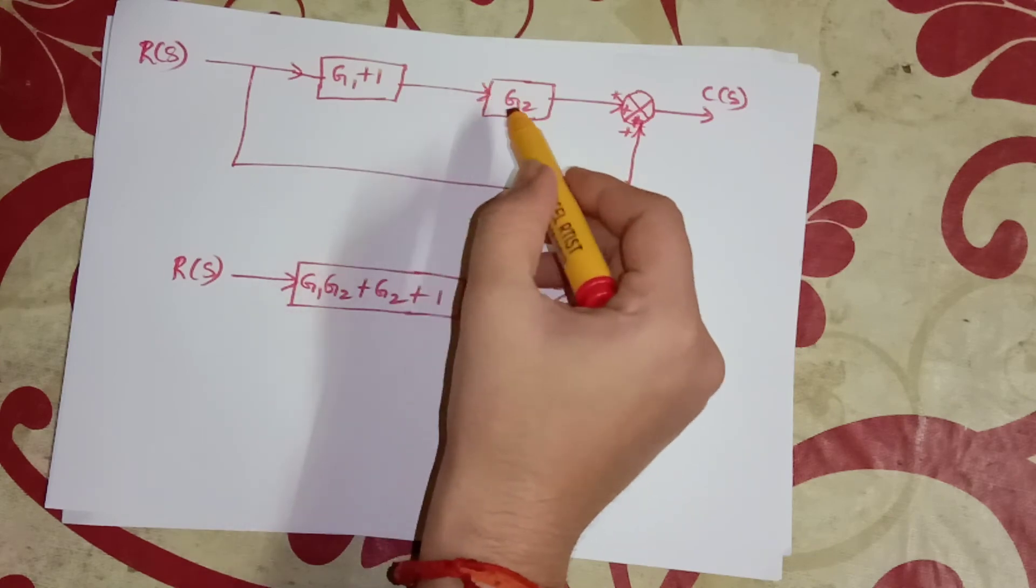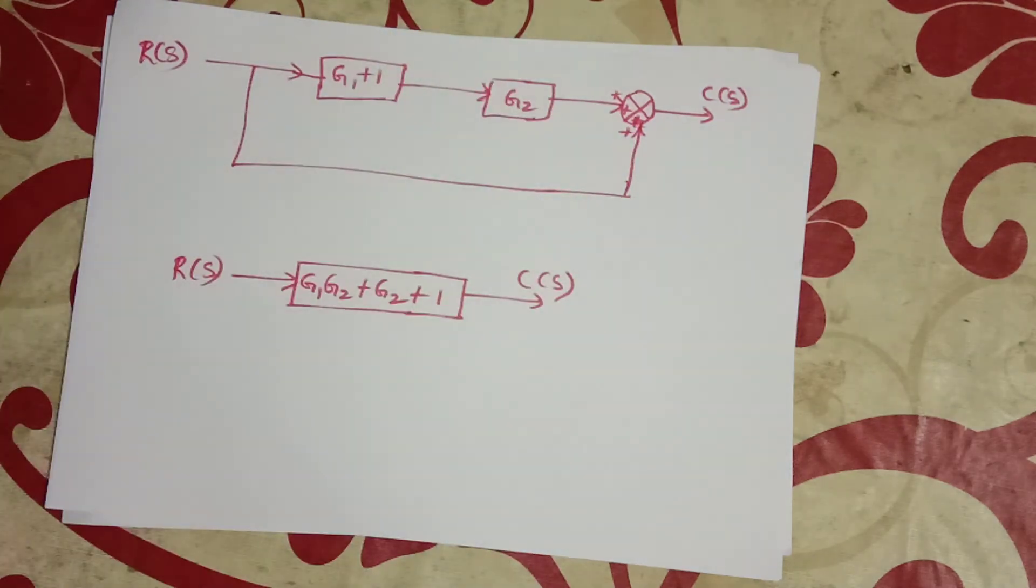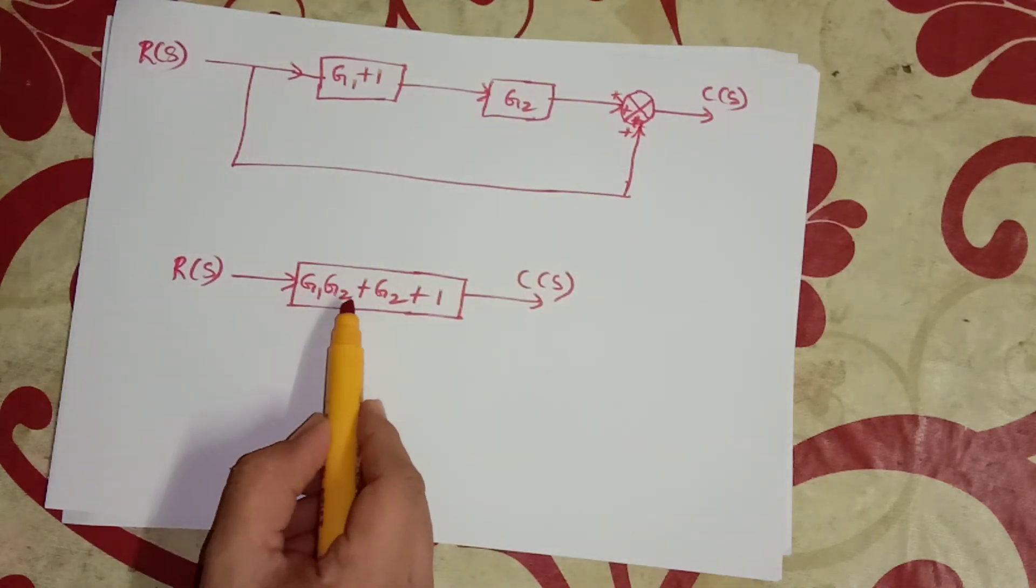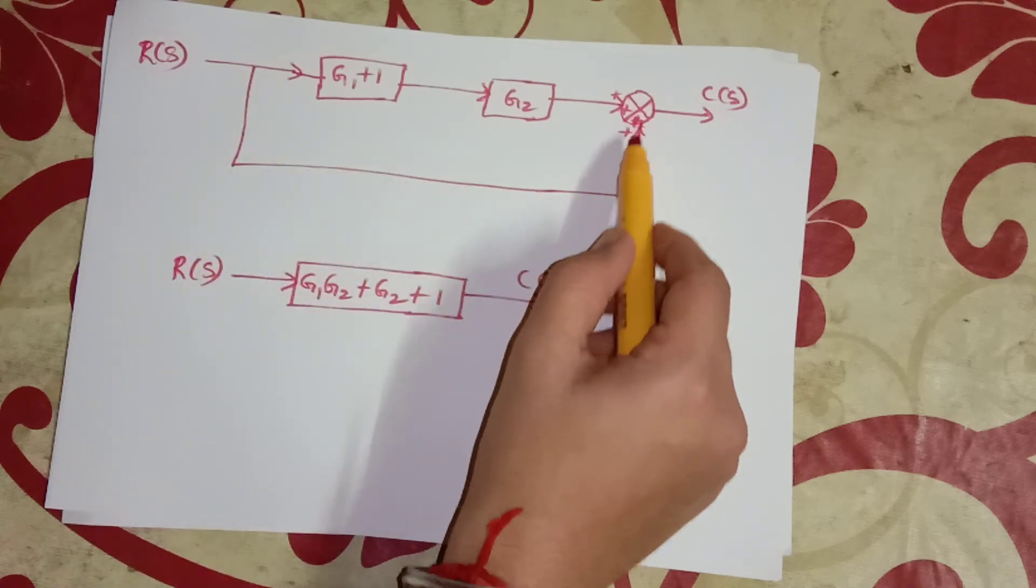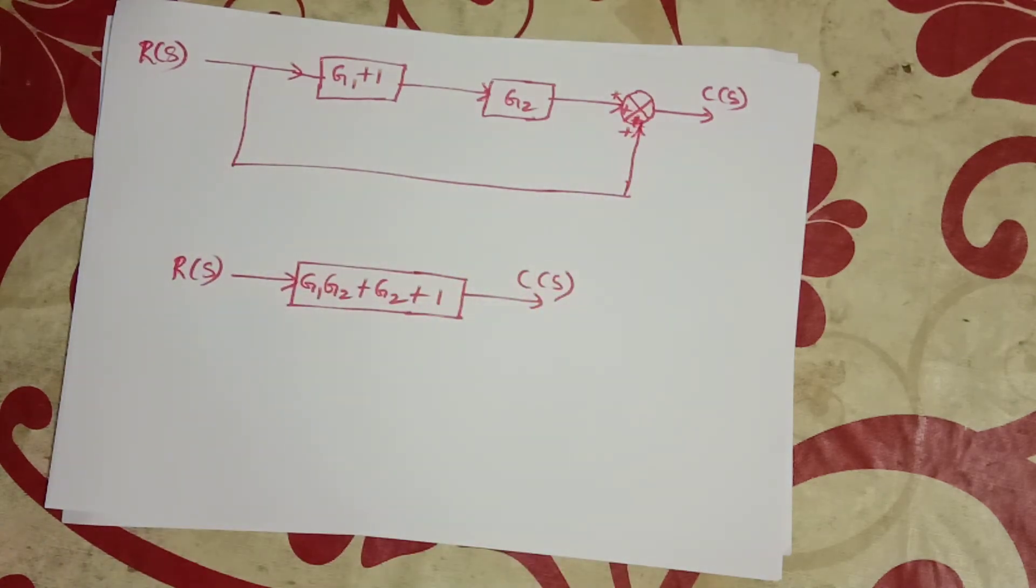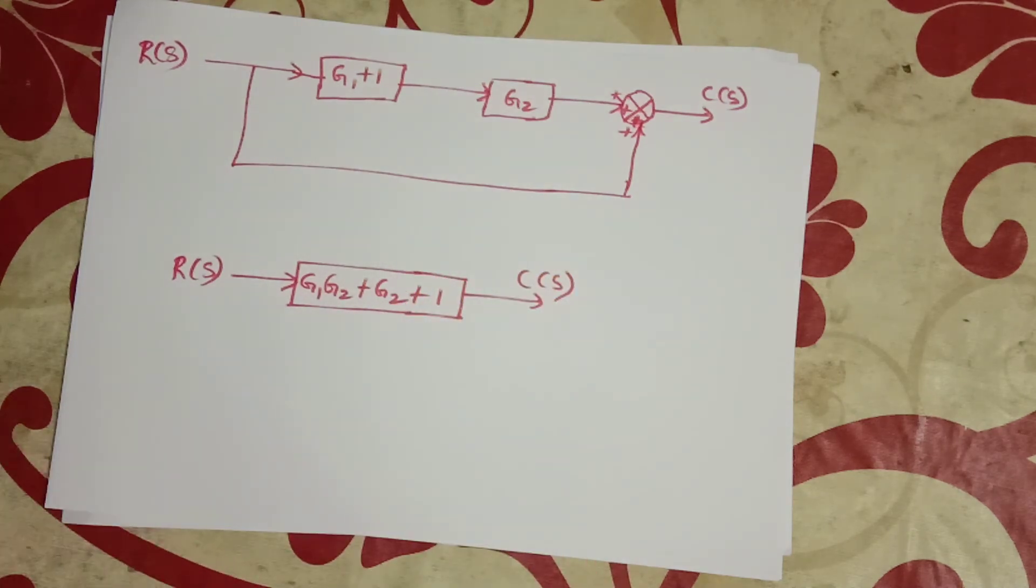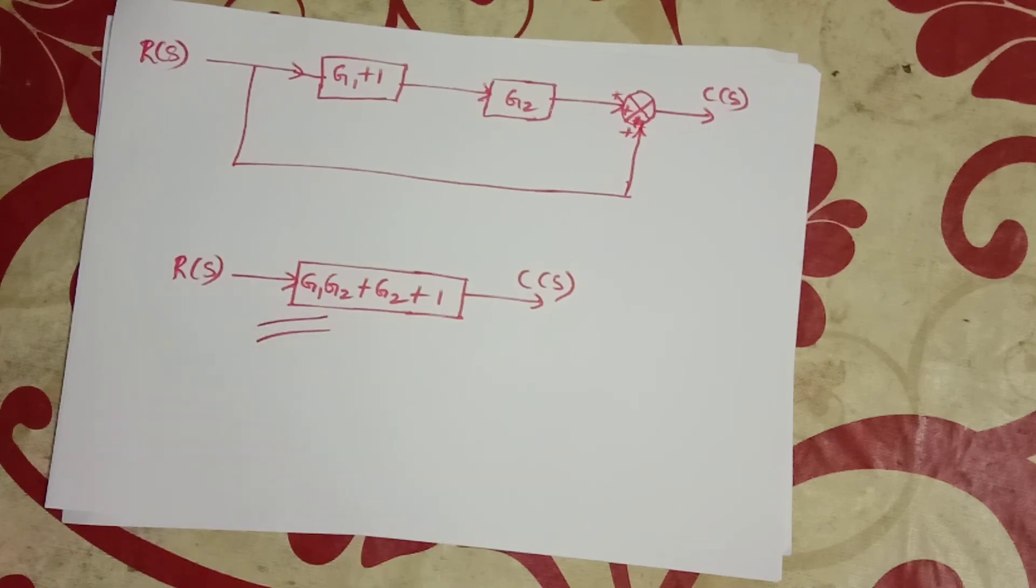Combining blocks in cascade for G1 plus 1 and G2, we will get G1 G2 plus G2. For this forward path, you can apply blocks in forward paths and finally we will get this answer.